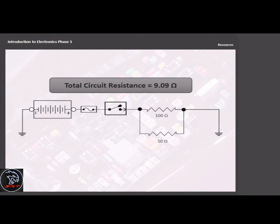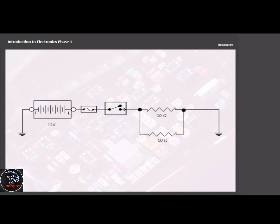Calculating total circuit resistance of parallel circuits is easy when the resistance of each branch is the same. Simply divide the resistance of each branch by the number of branches in the circuit.